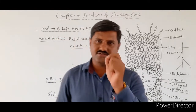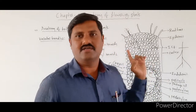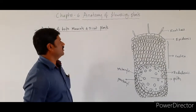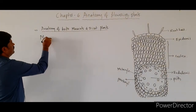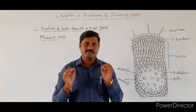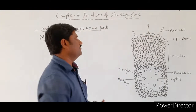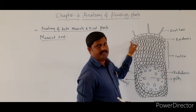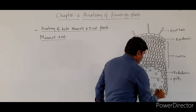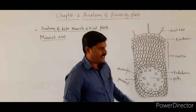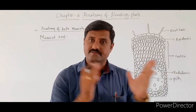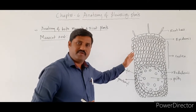Next, we shall go to the monocot root, which is similar to the dicot root. When we study the anatomy of the monocot root, similar structures are found: the outermost single-celled layer epidermis, followed by cortex, endodermis, pericycle, vascular bundles, and pith at the central axis.